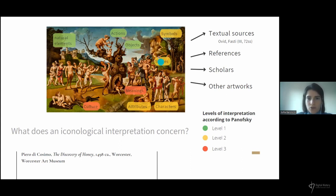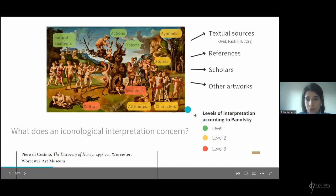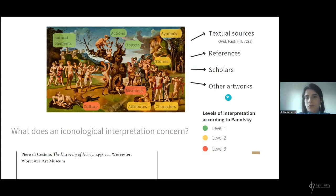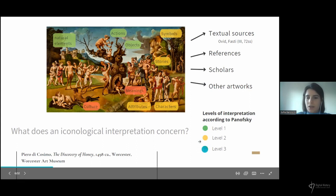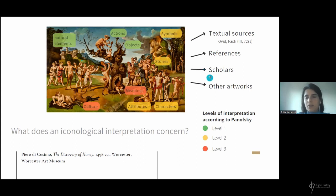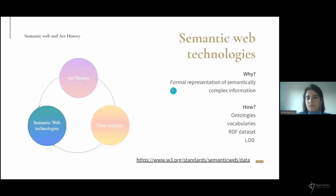So we have the story; we can have symbols — in this case a passus moralisé — and characters with their attributes such as Bacchus. An iconological interpretation therefore concerns different subjects inside the artwork, different levels, the interaction between them, but also the link to external sources such as other artworks, references to other scholars, and other references. Semantic web technologies are a good means for expressing this kind of complexity through ontologies, vocabularies, RDF datasets, and linked open data.